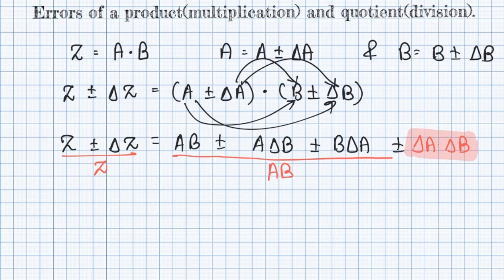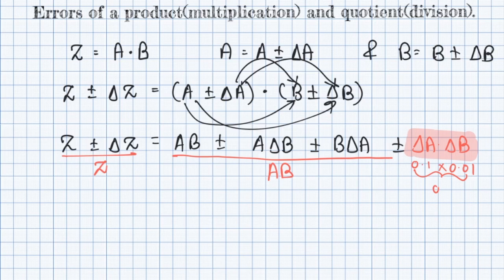Note that the last term Δa·Δb will be neglected, because Δa is an error part and the error part will always be very very small compared to the real parts a and b. For example, if Δa is 0.1 and Δb is 0.01, then their multiplication will be 0.001, which is very very small — so we can neglect it.